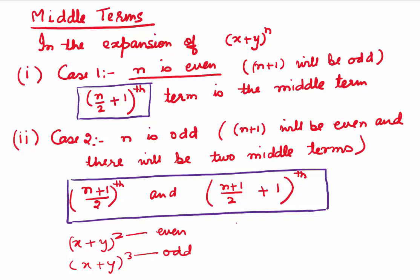When n is even, n plus 1 will be odd, so the middle term is given by the n by 2 plus 1th term. When n is odd, n plus 1 will be even and we will get two middle terms: the n plus 1 by 2th term and the n plus 1 by 2 plus 1th term.